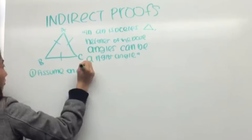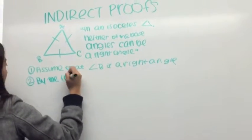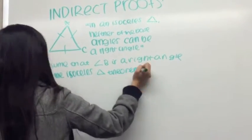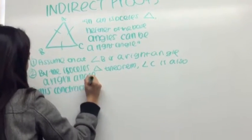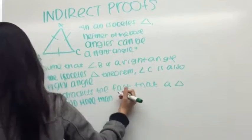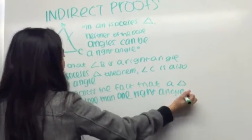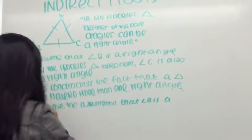Therefore the assumption must be false. In an isosceles triangle, neither of the base angles can be a right angle. Assume that angle B is a right angle. By the isosceles triangle theorem, angle C is also a right angle. This contradicts the fact that a triangle can have no more than one right angle. Therefore, the assumption that angle B is a right angle must be false, and the original conclusion is true.